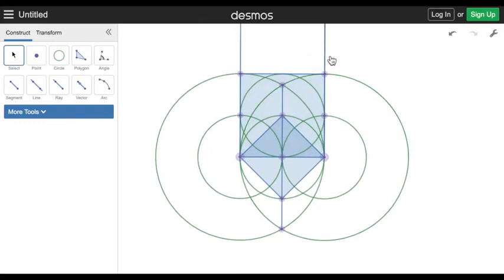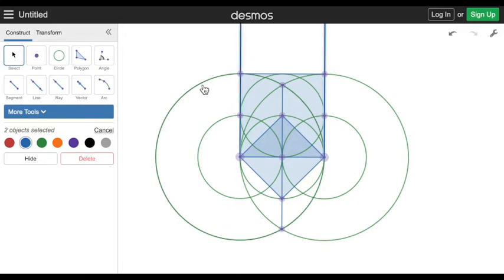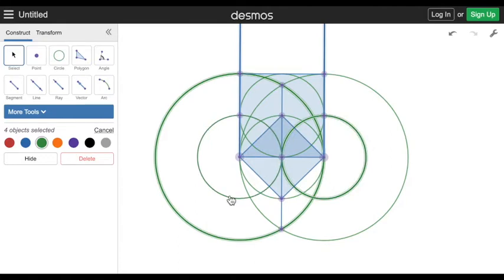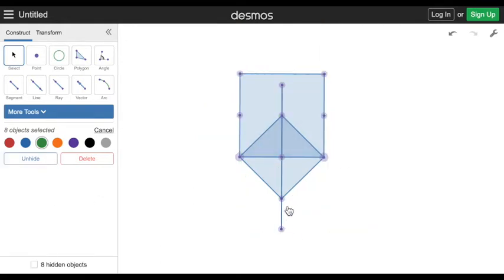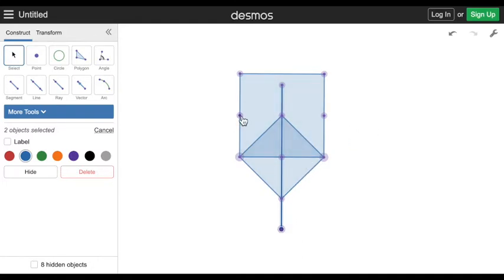So yeah, now I'm gonna hide everything. Let's see, just gonna hide all these circles that we don't need. Hide those first, then hide this one, and also these extra points. And this one too.